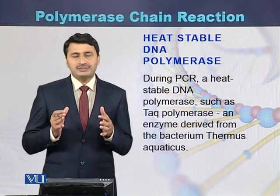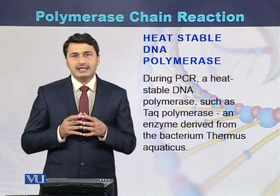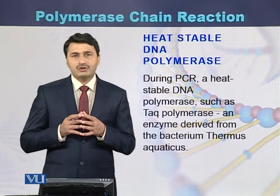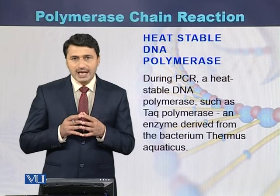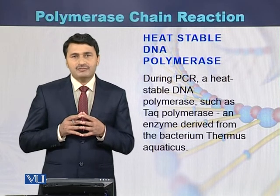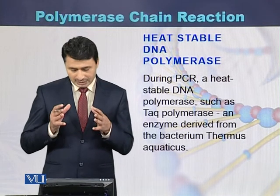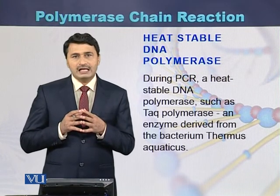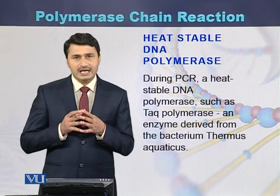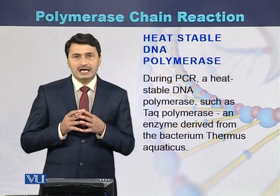During PCR, a heat-stable DNA polymerase is used. This DNA polymerase was initially identified and purified from a bacterium found in hot springs. The name of that bacterium is Thermus aquaticus. So the first time, DNA polymerase was purified from Thermus aquaticus and that DNA polymerase was used for PCR.